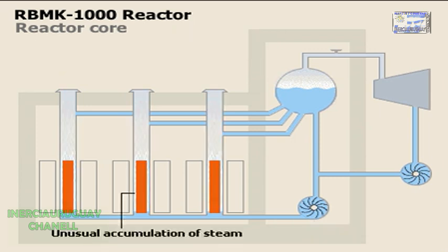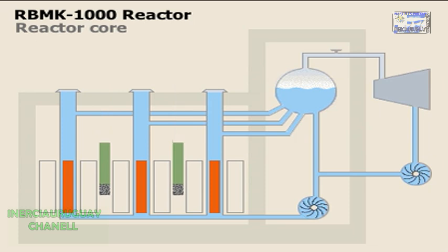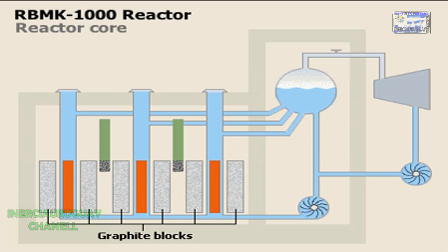An unusual accumulation of steam around the fuel rods could quickly increase the nuclear reaction to dangerously high levels. Clusters of control rods were lowered into the core to slow the reaction, or raised to increase it. These rods had tips made of graphite, which caused the reaction to increase slightly as they entered the core. Graphite blocks, placed between the fuel rods, were also used to moderate the nuclear reaction.